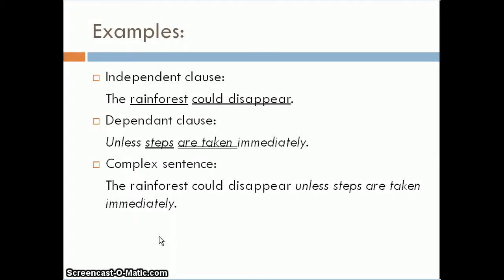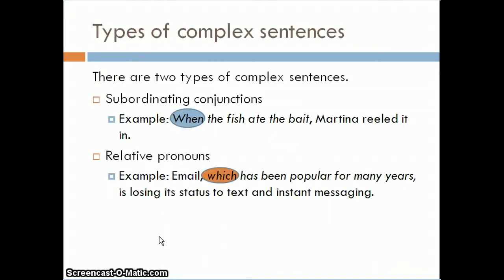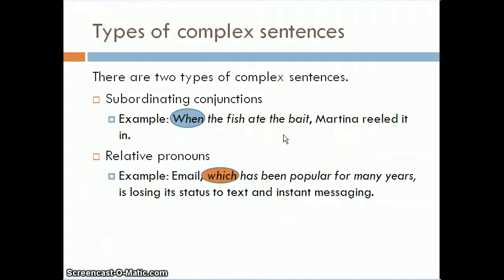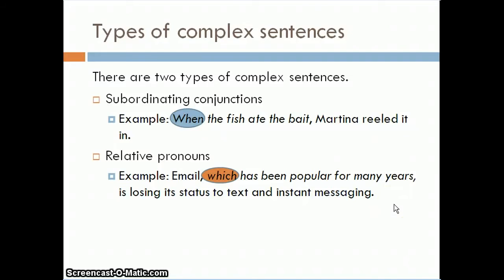There are two different types of complex sentences. The first includes subordinating conjunctions — for example, 'When the fish ate the bait, Martina reeled it in.' Here 'when' is the subordinate conjunction, and 'when the fish ate the bait' is the dependent clause. The second type uses a relative pronoun — for example, 'Email, which has been popular for many years, is losing its status to text and instant messaging,' where 'which has been popular for many years' is the dependent clause.